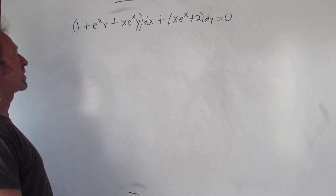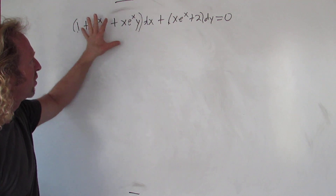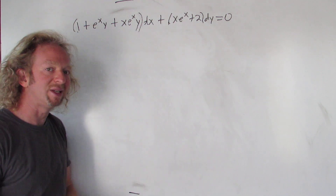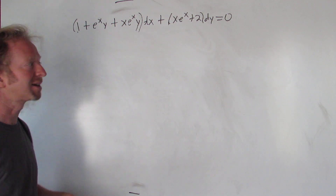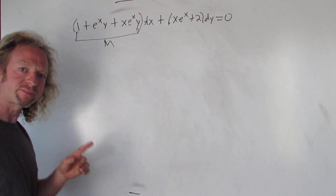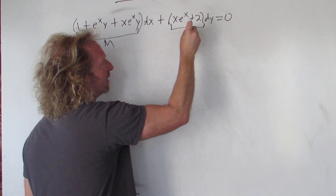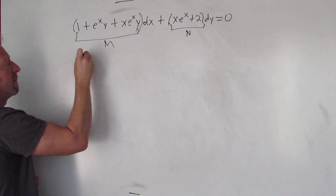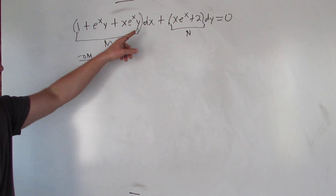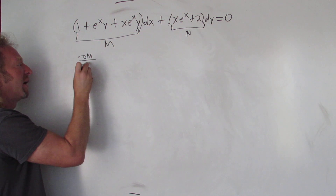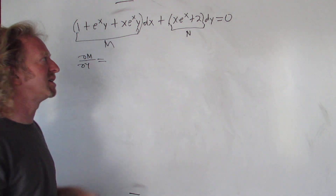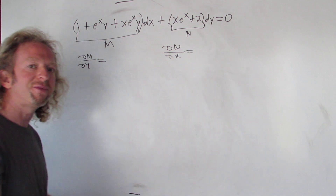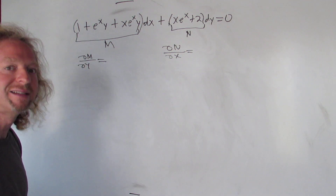In this video we have a differential equation. Whenever you have a differential equation that looks like some stuff dx plus some stuff dy, it's probably going to be homogeneous or it's going to be exact. Let's try to see if it's exact. To check if something is exact, you start by calling this M and this over here N, then you take partial derivatives.